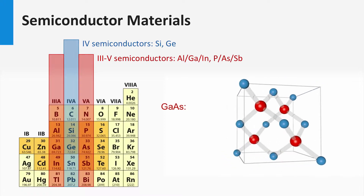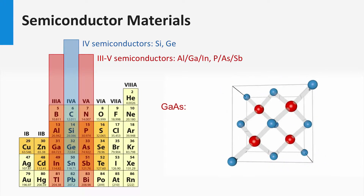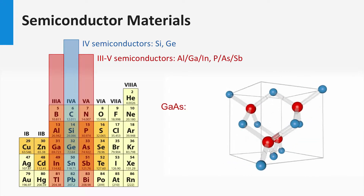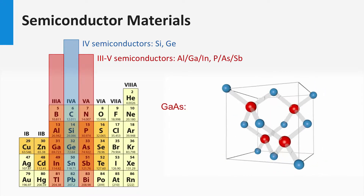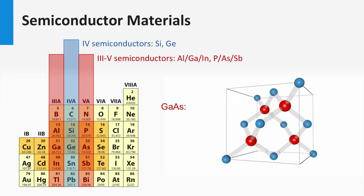Semiconductor properties can also be achieved with materials other than elements with four valence electrons. Let's consider the so-called III-V semiconductor materials like gallium arsenide. III-V semiconductors consist of two elements: one element has three valence electrons, and the other has five valence electrons. These materials can, similar to silicon, form a diamond cubic crystalline lattice. In this crystalline lattice, gallium atoms are the blue atoms and the arsenide atoms are the red atoms. Every gallium atom neighbors four arsenide atoms, and every arsenide atom neighbors a gallium atom.